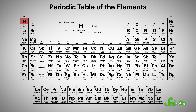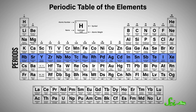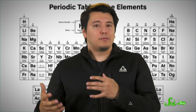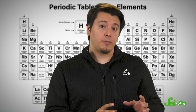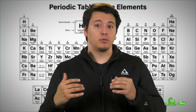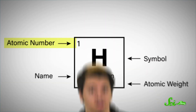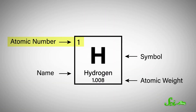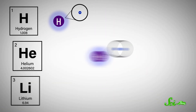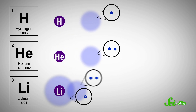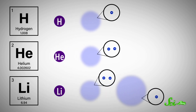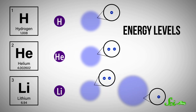The standard table organizes elements into columns called groups, and rows called periods. The odd blocky shapes that result actually tell us a lot about the properties of elements and their relationships to each other. As the atomic number of the elements goes up, so does the number of electrons each element has. Due to their quantum properties, the electrons will occupy discrete positions known as energy levels.